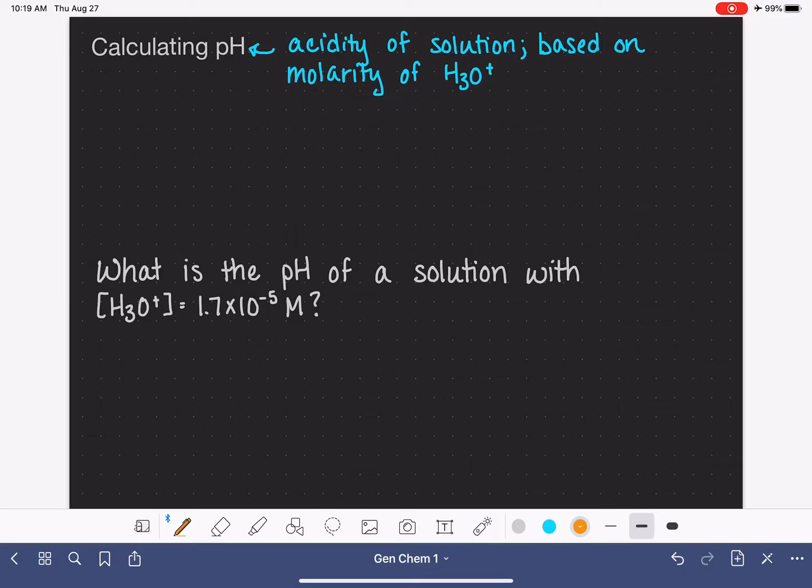In this video, I'm going to teach you how to do really simple pH calculations. The equation that we use for calculating pH is the negative log of the H3O+ concentration.